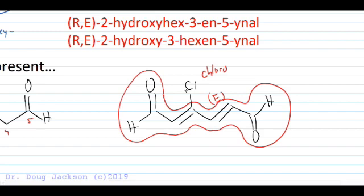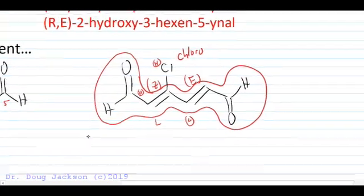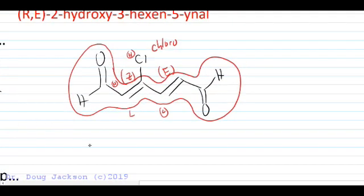We have an E here with opposite groups in the trans position. And on the left hand side, we've got chlorine as a high-ranked group besides carbon, has a higher atomic number. And then carbon versus hydrogen, high and low. That's a Z stereocenter. So we'll include those in this name as well.